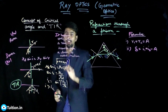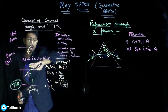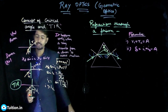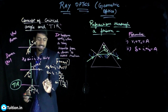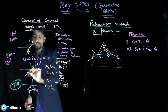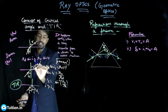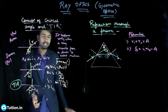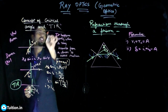Is total internal reflection possible when your ray travels from rarer to denser medium? No — because the ray will always keep bending towards the normal and cannot get reflected back in the same medium. This happens only when light travels from denser to rarer medium. The condition is i > ic, where ic is the critical angle at which the ray grazes the surface with a refraction angle of 90°.